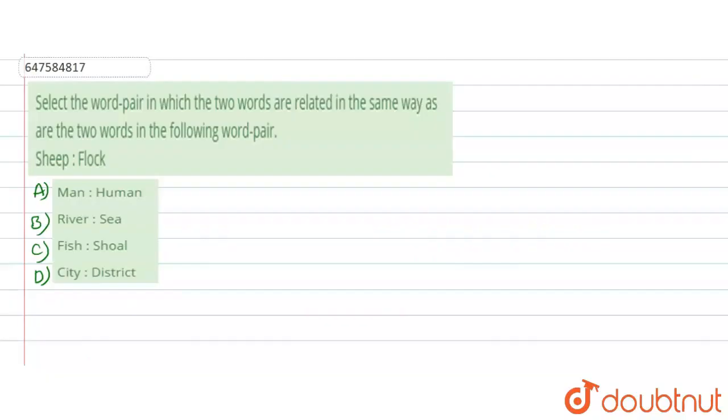Hello students, our next question is: Select the word pair in which the two words are related in the same way as are the two words in the following word pair.